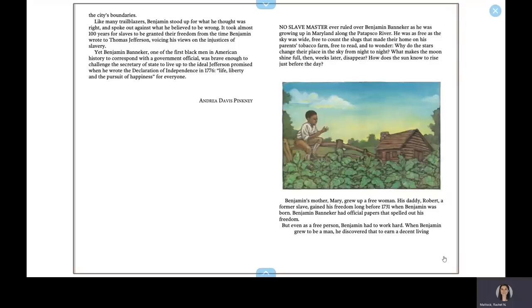Like many trailblazers, Benjamin stood up for what he thought was right and spoke out against what he believed to be wrong. It took almost 100 years for slaves to be granted their freedom from the time Benjamin wrote to Thomas Jefferson, voicing his views on the injustices of slavery. Yet Benjamin Banneker, one of the first black men in American history to correspond with a government official, was brave enough to challenge the secretary of state to live up to the ideal Jefferson promised when he wrote the Declaration of Independence in 1776: Life, liberty, and the pursuit of happiness for everyone.